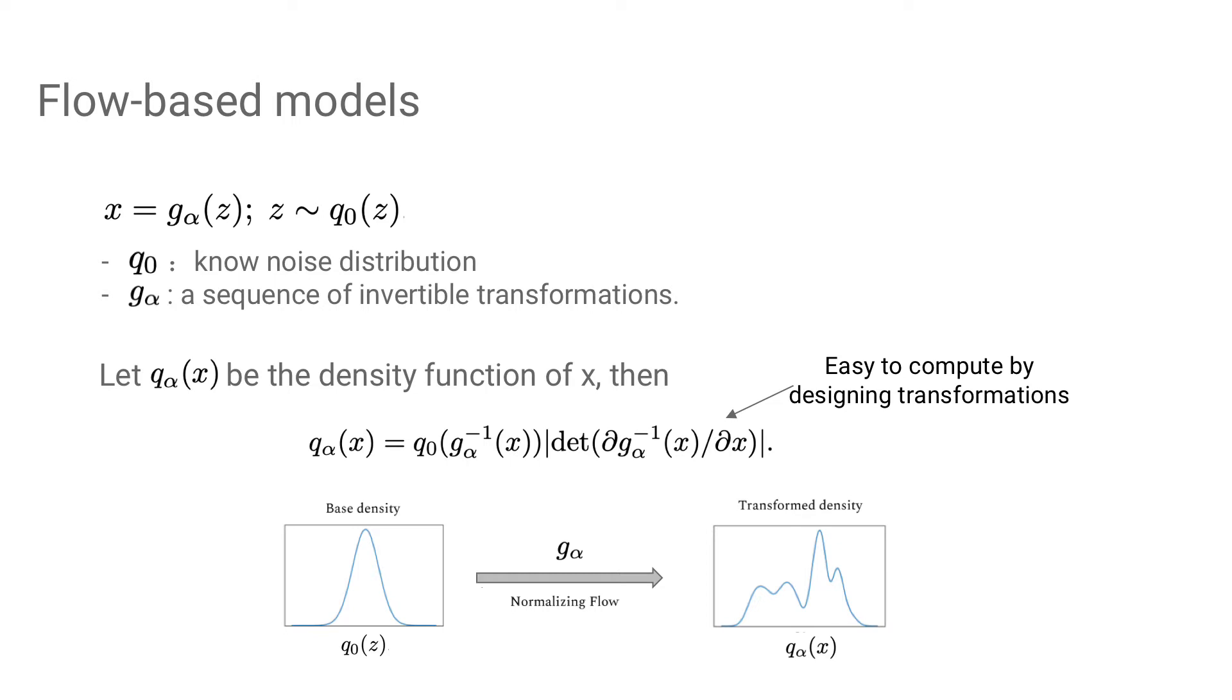Second, flow-based models assume that data distribution is transformed from a known noise distribution q0, and the transformation g_alpha consists of a sequence of invertible functions. The data distribution q_alpha is tractable by designing specific types of transformations.